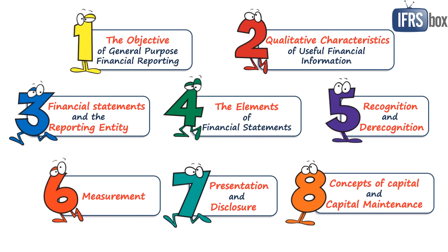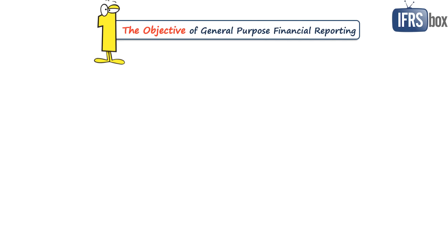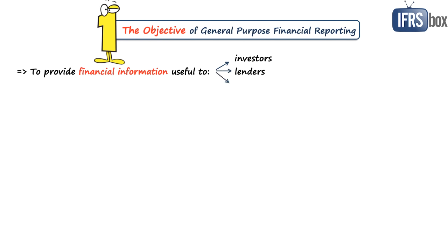The new framework has eight chapters in total and we will take a closer view at each chapter. The first one is about the objective of general purpose financial reporting, which is to provide financial information about the reporting entity that is useful to existing and potential investors, lenders and other creditors to make various decisions — for example, about trading with equity and debt instruments, providing loans and so on.